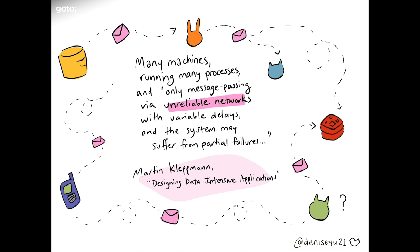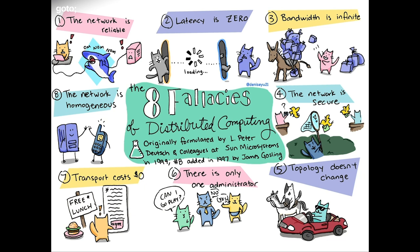This basically means that modern distributed systems, according to Martin Kleppmann who wrote 'Designing Data-Intensive Applications,' have many processes running on many machines, communicating only via message passing over an unreliable network with variable delays, and a system that might suffer from partial failures, unreliable clocks, and process pauses. Distributed computing is notoriously difficult to reason about, and it's really easy to make mistakes. In the 1990s, some people at Sun Microsystems — and later James Gosling, the Java guy — came up with a list of eight common fallacies that people make when reasoning about distributed systems. The one we're honing in on today is the reliability of the network.